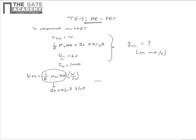Upon simplification, we see that KN can be written as 80 microampere per volt squared or 0.8 milliampere per volt squared. We know that the transconductance Gm can be written as 2 times square root of KN ID.